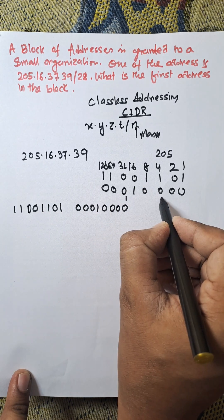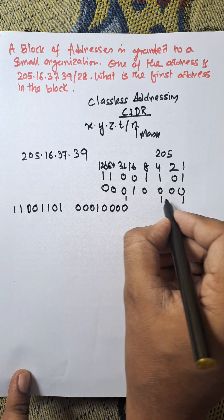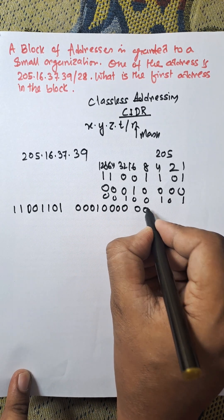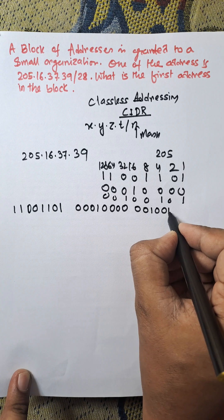And for 37, that's 32 and 5, which is 32, 4, and 1. That is 00100101.